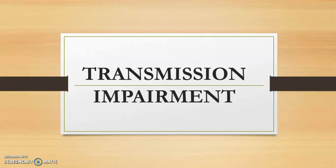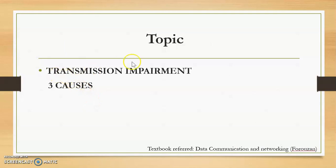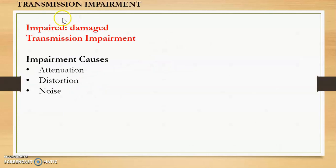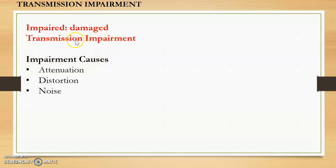In this video we will discuss transmission impairment — what it is and its three causes. The word 'impaired' means damaged or defective. Transmission impairment occurs when a signal sent over a medium gets damaged, meaning the signal which is sent is not the same as the signal that is received. That is known as transmission impairment.